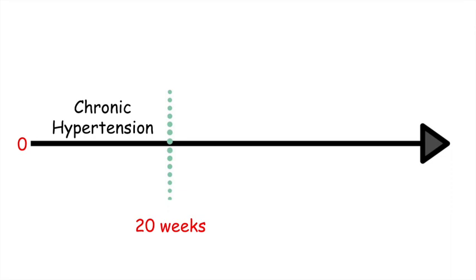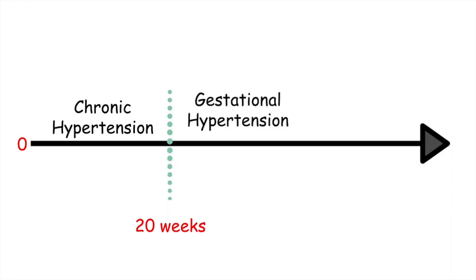Chronic hypertension is not specific to only pregnant women. It's when the systolic blood pressure is greater than 140 and/or the diastolic blood pressure is greater than 90 prior to conception. The other hypertensive disorders that occur in pregnancy happen after 20 weeks gestation, and these include gestational hypertension, preeclampsia, and eclampsia.